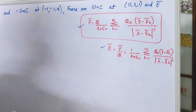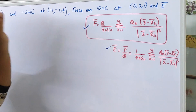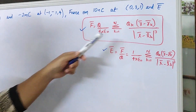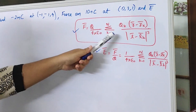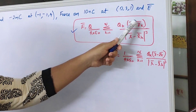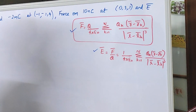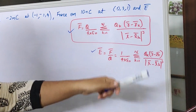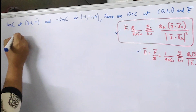These two are the equations. For force, we assume that there are n charges surrounding the main charge q. This is the general equation for n charges. For this problem, n will be 2. So first will be q1 into vector r minus r1, divided by modulus of r minus r1 the whole cube, plus q2 into vector r minus r2, divided by modulus of vector r minus r2 the whole cube.